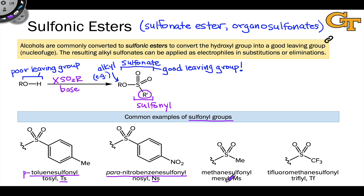Methane sulfonyl is very common; the sulfonyl group itself is abbreviated Ms. You'll also hear it referred to as mesyl. Methane sulfonyl contains not an aromatic ring linked to sulfur, but just a methyl group — just a CH₃.